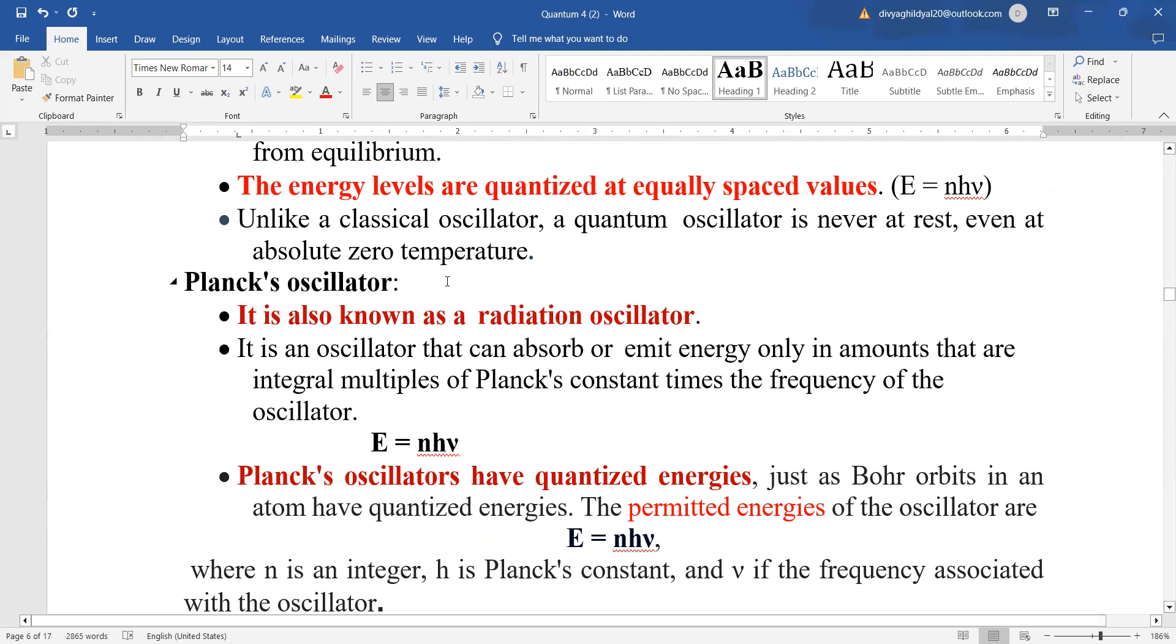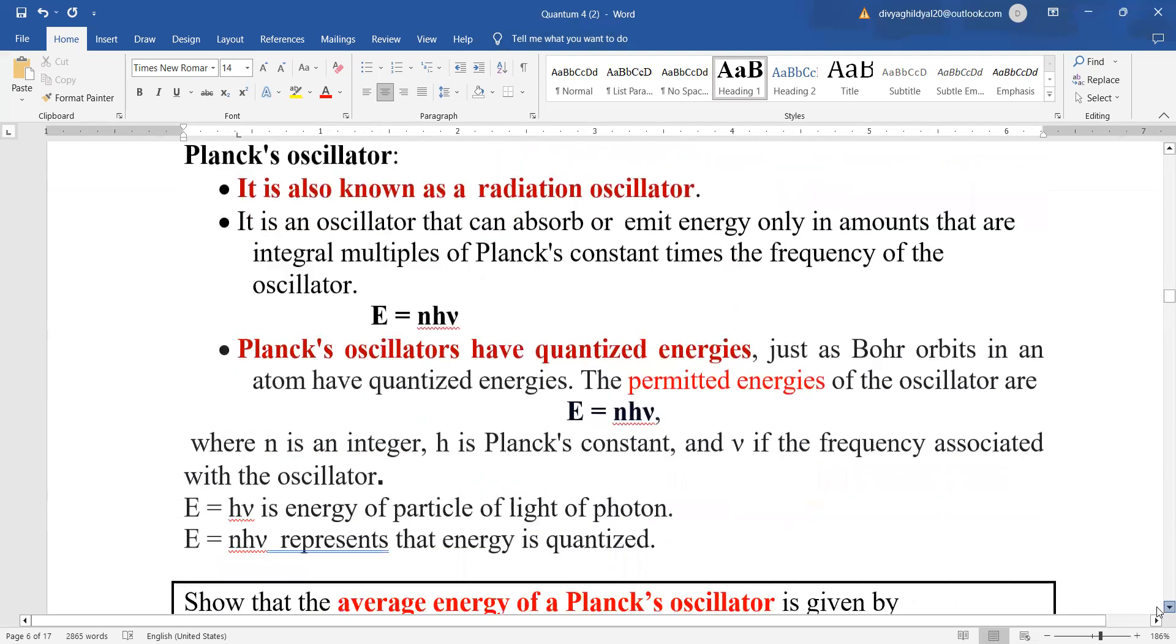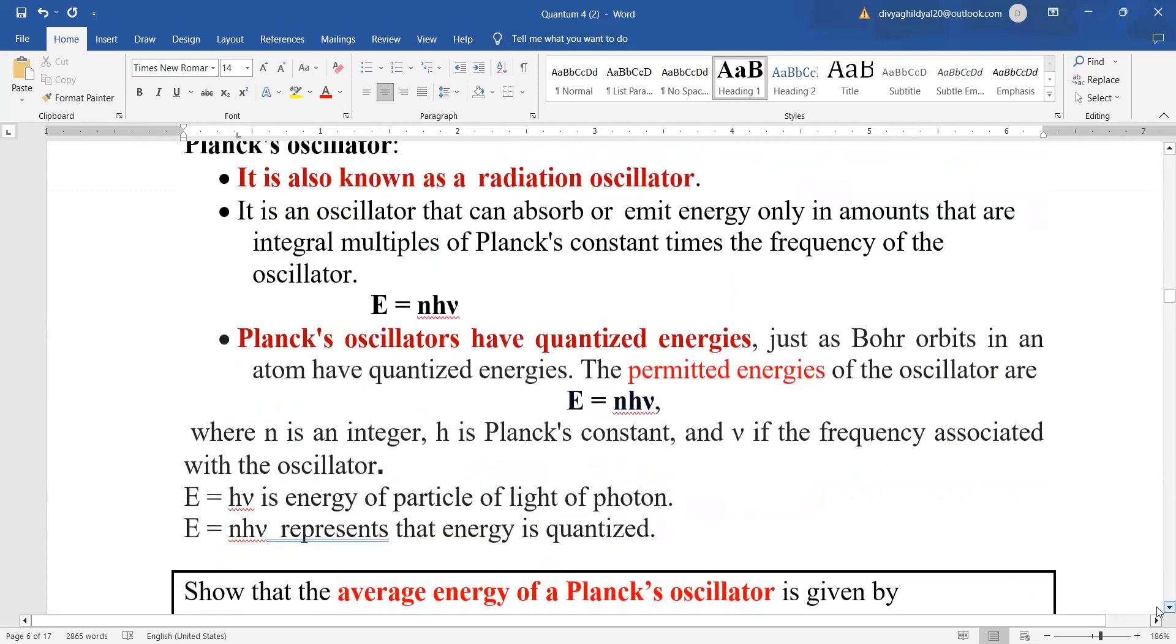Planck's oscillator, this is also known as a radiation oscillator. It is an oscillator that can absorb or emit energy only in amounts that are integral multiples of Planck's constant times the frequency of the oscillator.